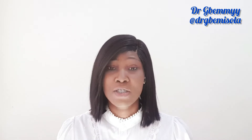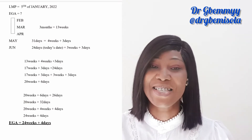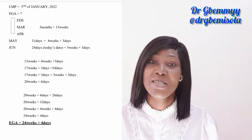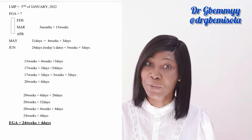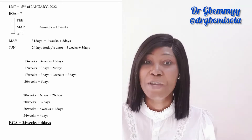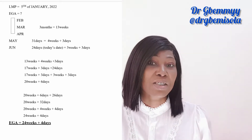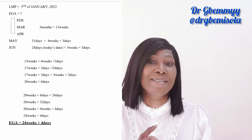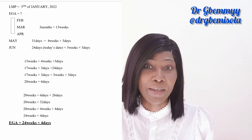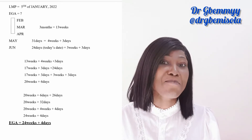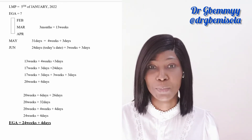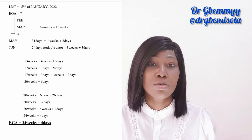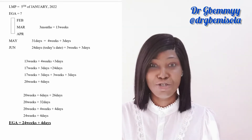For EGA, every three months counts as 13 weeks. Our LMP is 5th of January. So the three months — February, March, and April — are counted as 13 weeks. Keep 13 weeks aside and move on to May and June.